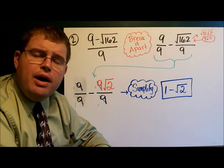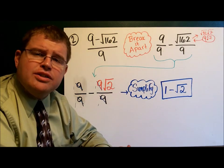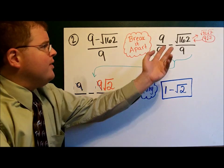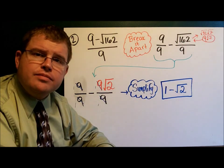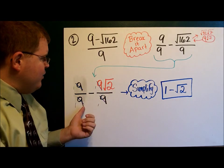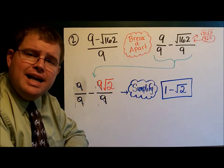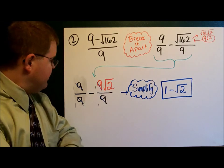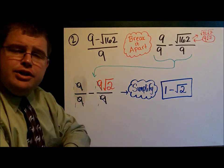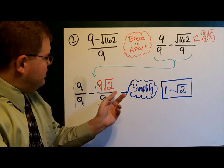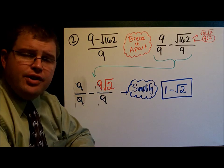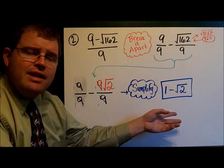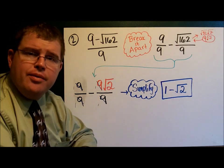Once we've broken it apart, then we simplify our square root. The square root of 162 is 9 square roots of 2. So that gives me 9 over 9 minus 9 square roots of 2 over 9. 9 over 9 reduces to 1. 9 square roots of 2 over 9 reduces to the square root of 2. And so what I have is 1 minus the square root of 2.